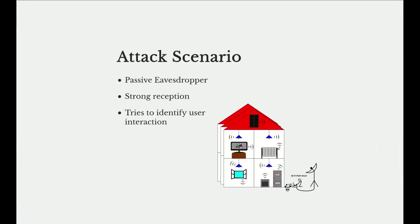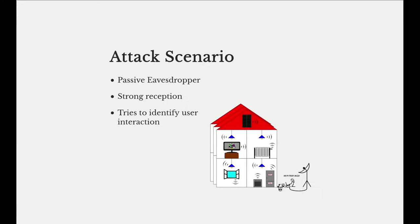On to the main matter of the paper — we assume the following attack scenario: we have a passive eavesdropper who does not inject traffic into the system, who does not compromise devices, but who just listens passively to the communication being received and transmitted by the system. The attacker has strong reception so they are able to capture all traffic. They are not able to break any encryption whatsoever, and the goal is to identify user interaction — to determine whether a user is currently interacting with the system or not.